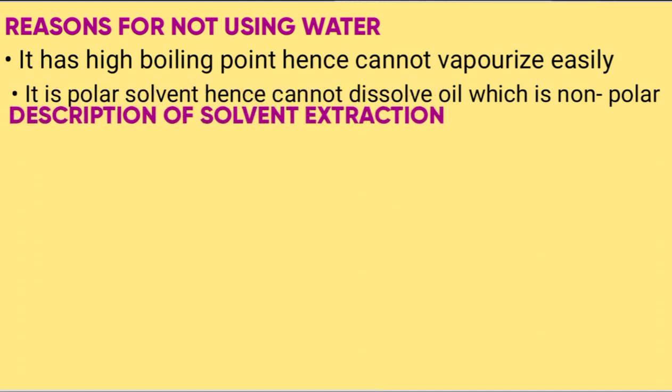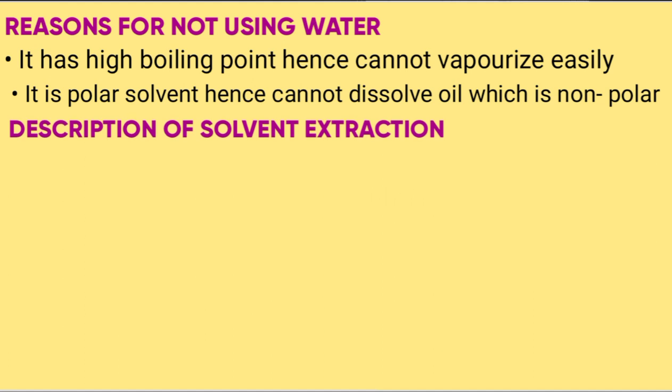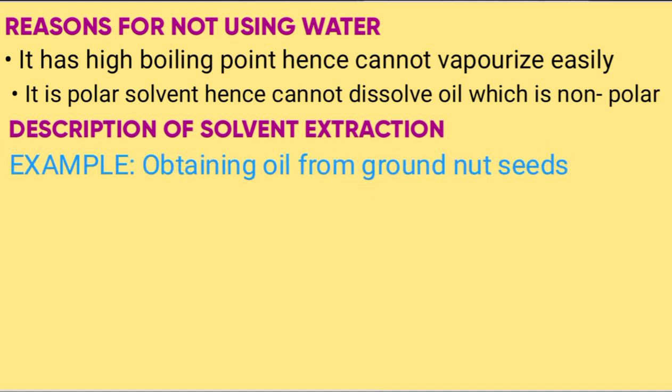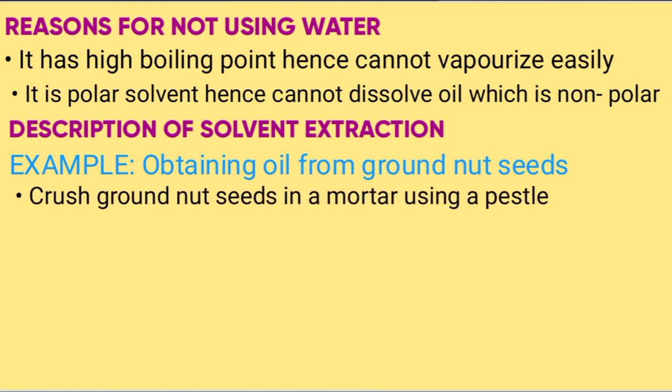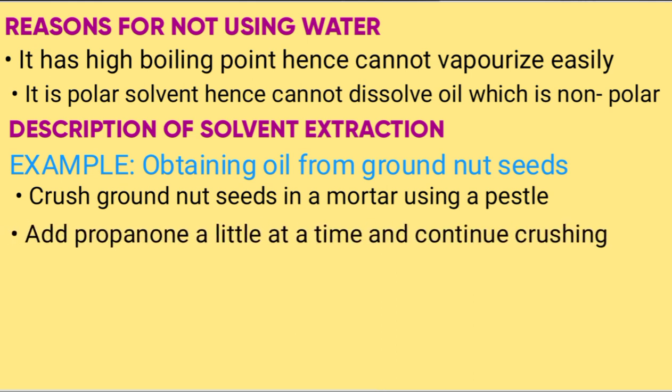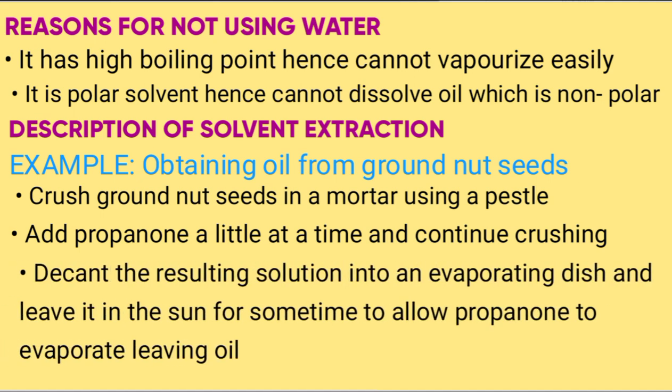Description of solvent extraction — for example, obtaining oil from groundnut seeds. Crush groundnuts in a mortar using a pestle. Add propanol a little at a time and continue crushing. Decant the resulting solution into an evaporating dish and leave it in the sun for some time to allow propanol to evaporate, leaving the oil.